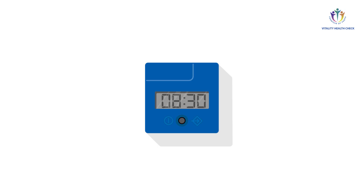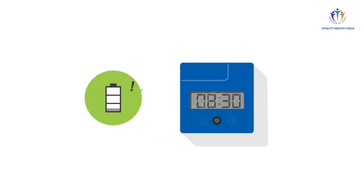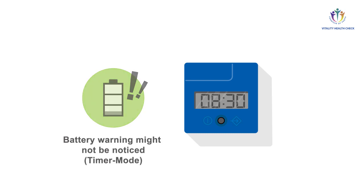If you frequently run the VHC reader in timer mode, it might happen that you don't notice the battery warning symbol is showing up during countdown, because you come back only after the countdown is finished to read the quantification results. Thus, in case you frequently use the timer mode, it is recommended to ensure permanent power supply via the data reader cable.